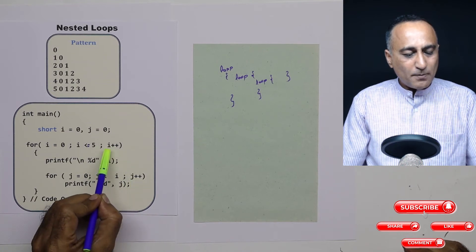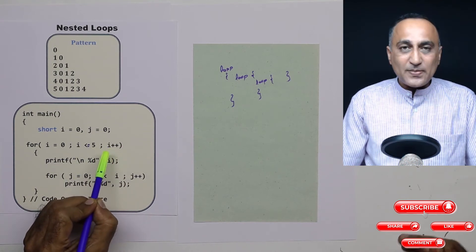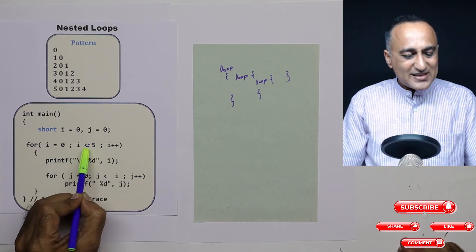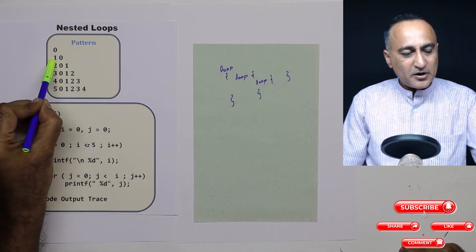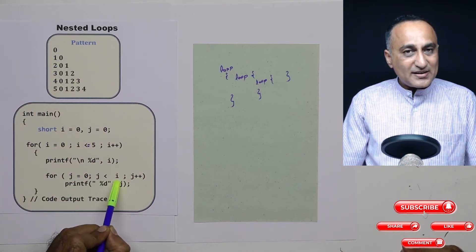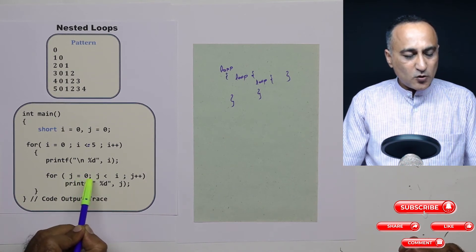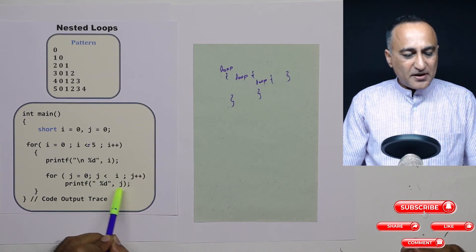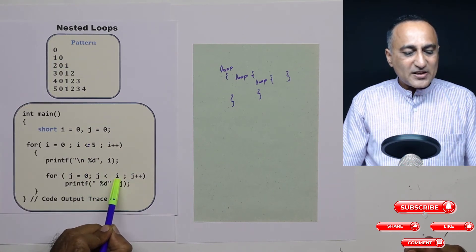It will increase the value of j by one and go back. Once I come back, the value of i is increased by one — i now becomes one, and one is less than or equal to five. So I will print the value of i, which prints one. Then j is reinitialized back to zero — it will not keep the old value. Zero is less than one, the condition is true, so it is going to print zero. Then j is increased by one, j becomes one, and one is not less than one.